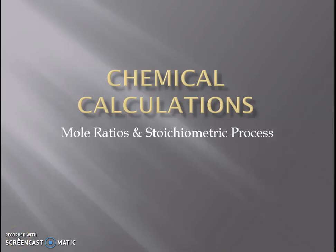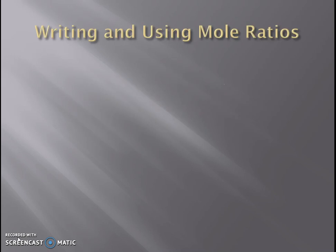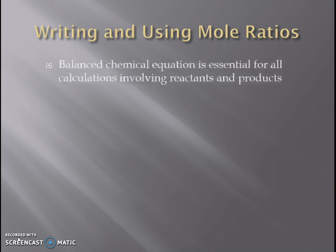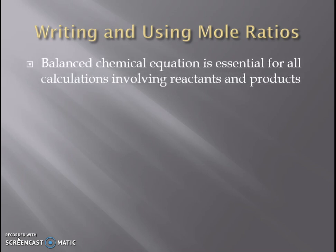In this video, we're going to take a look at chemical calculations — how to get mole ratios from balanced chemical equations and the stoichiometric process we use for these calculations. In order to do calculations that involve two different substances and how they relate to each other, we need a balanced chemical equation. It's essential to be able to relate one substance to another, whether it's a reactant or a product.